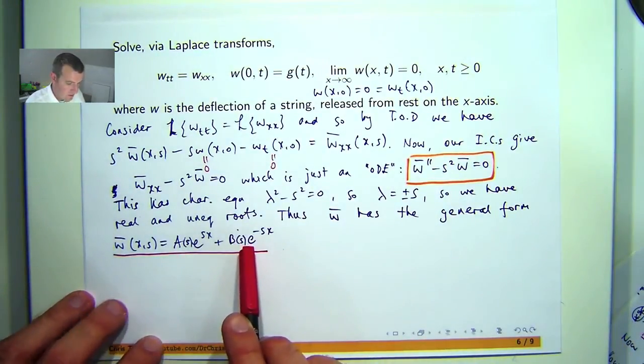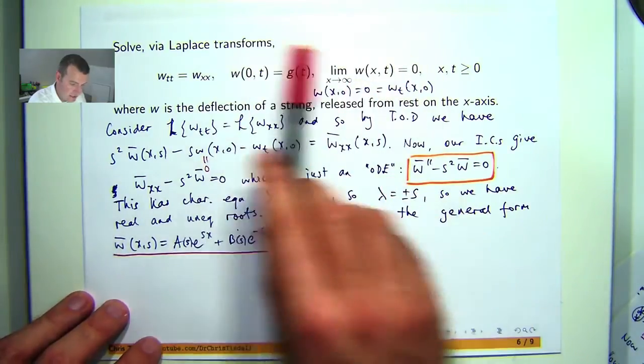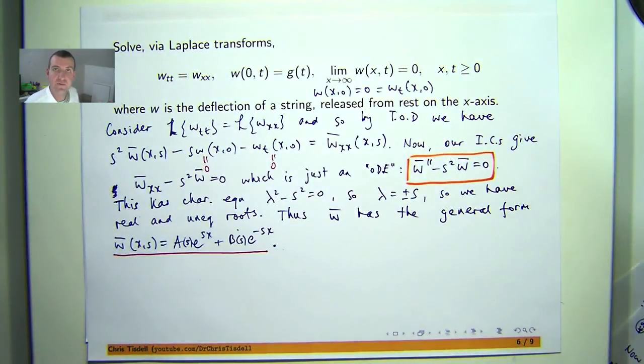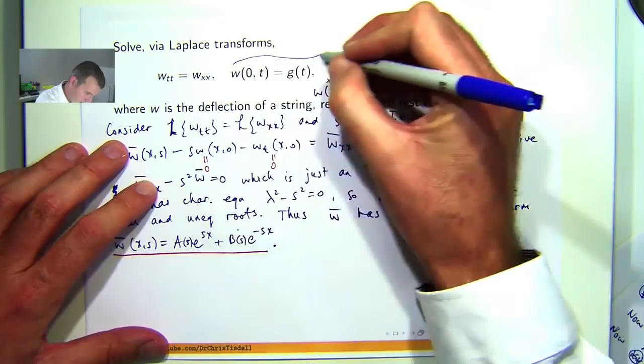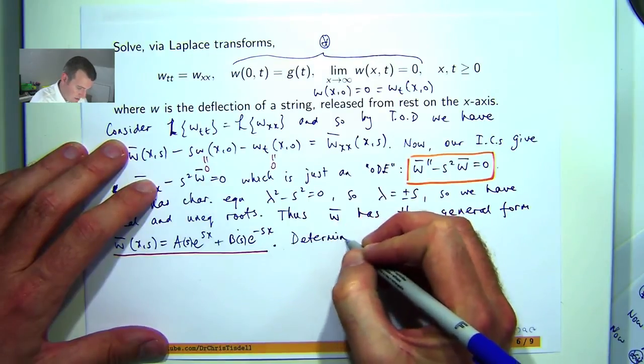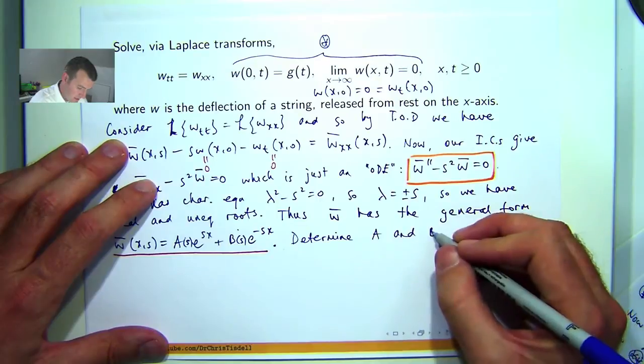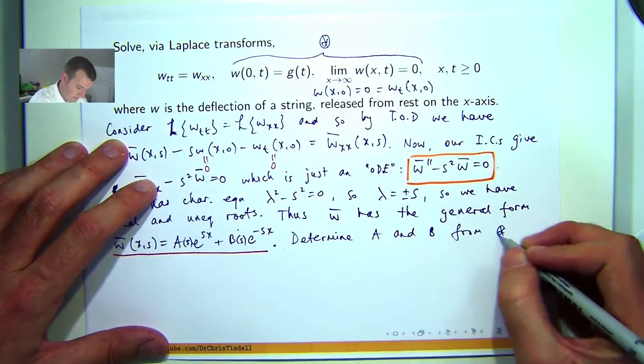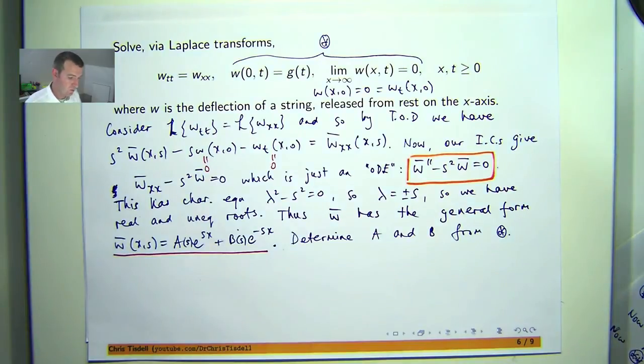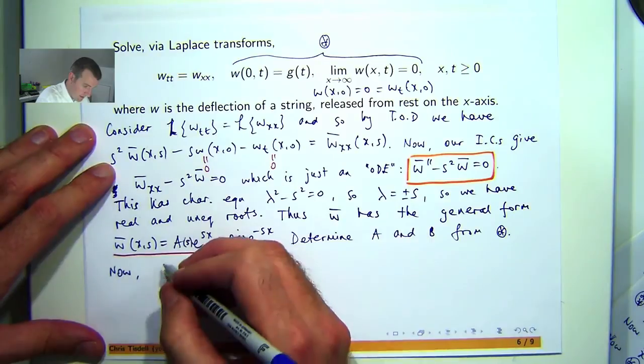How do we determine A of s and B of s? Well, we can get them through the remaining conditions associated with our PDE. So once we have narrowed down our W bar, we can invert it and get w. What we would like to do is determine A and B, which may depend on s, from these conditions. You can see up here, these conditions are in terms of little w. What we would like to do is have them in terms of W bar, the transform of little w.